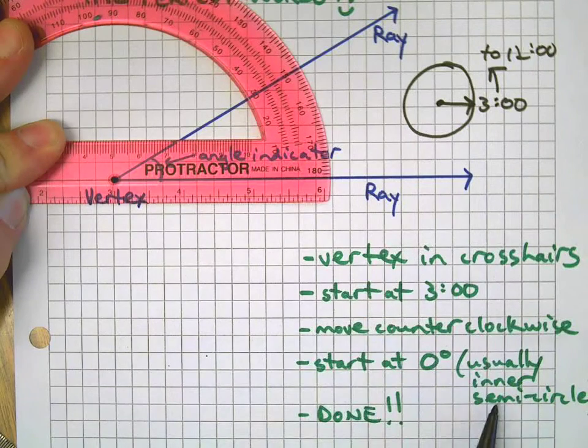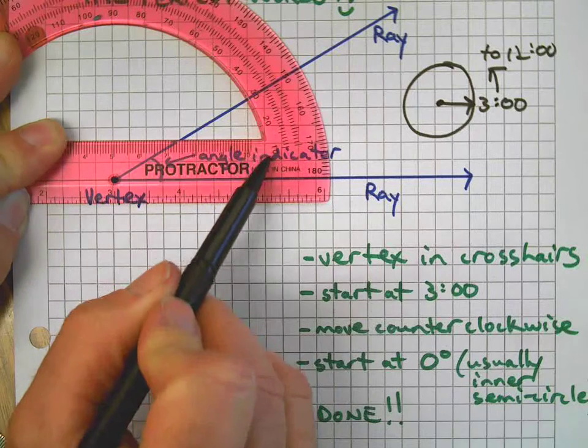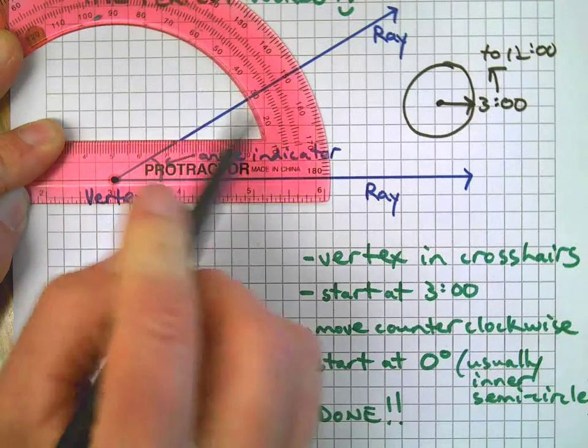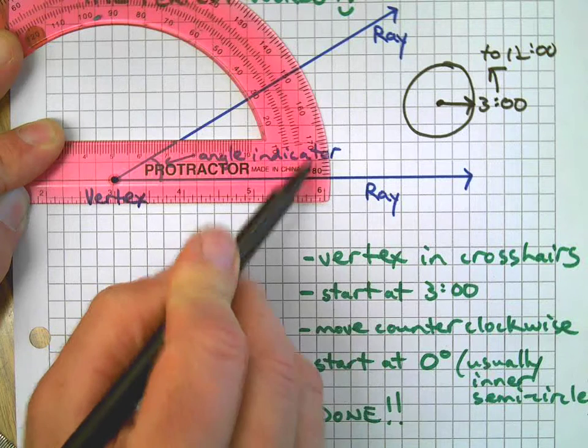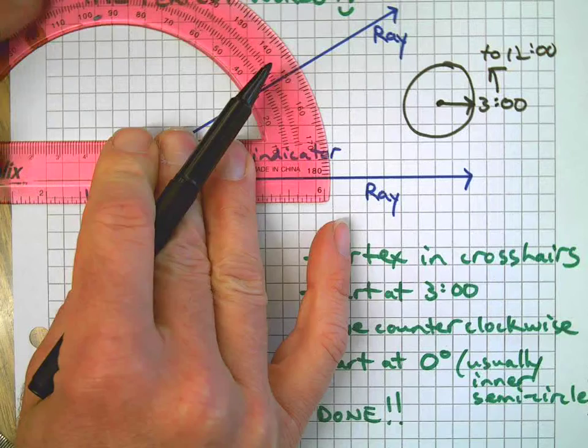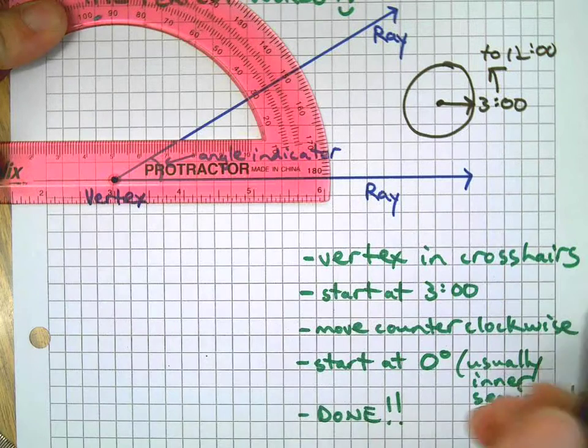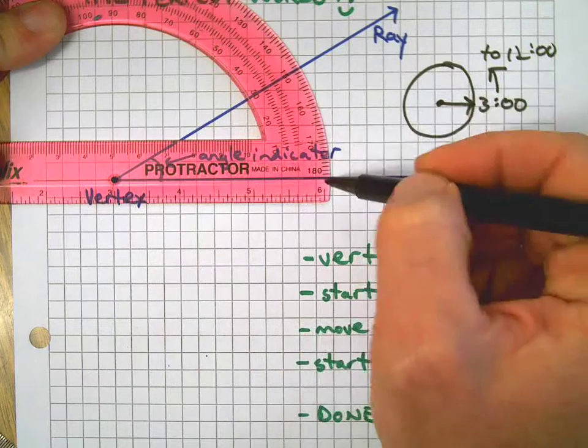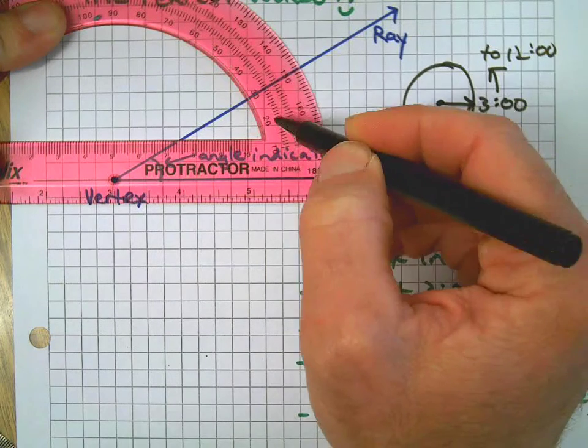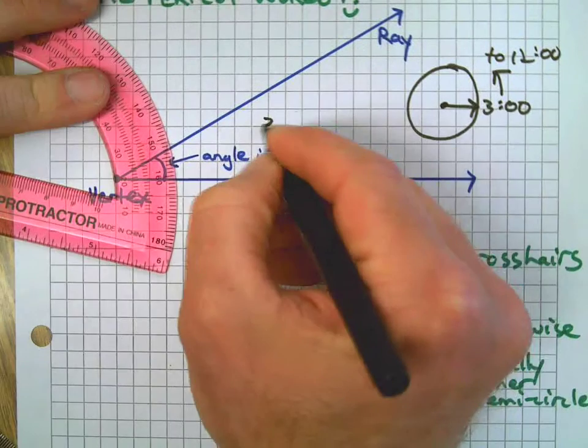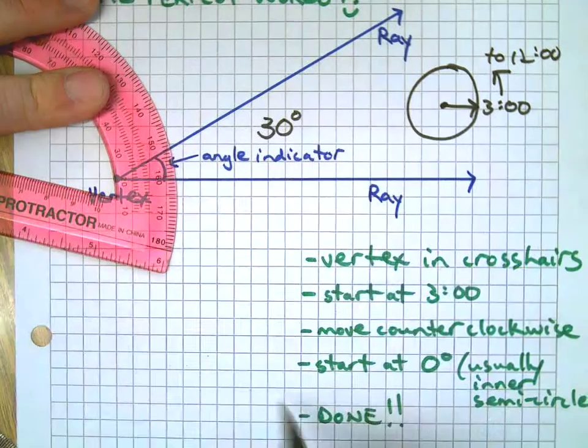You count from zero, which is usually the inner semicircle. There's two sets of measurements here - this one goes 10, 20, 30, 40, 50 on the inside. On the outside it goes 180, 170, 160 going backwards. But we're going to start at zero and count up starting at three o'clock. So we just go 10, 20, 30 - this one happens to be 30 degrees. We write it down and we're done.